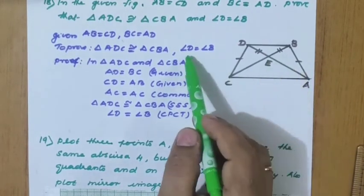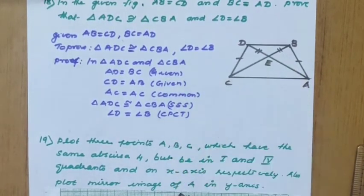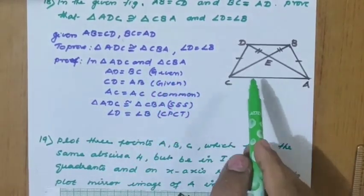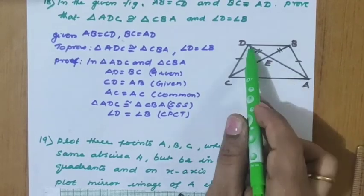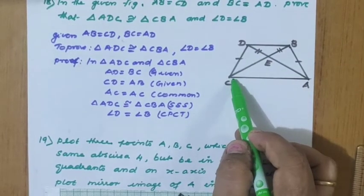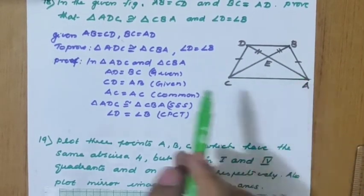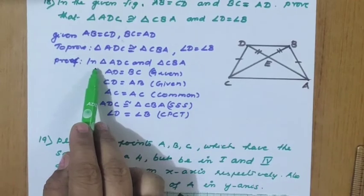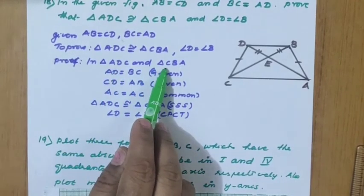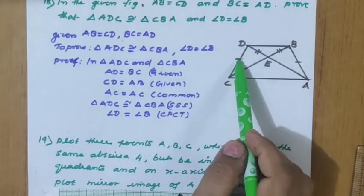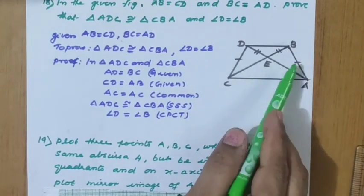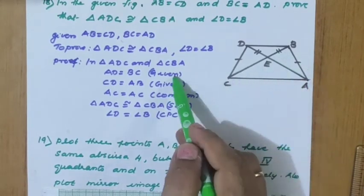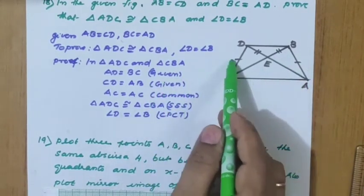In triangle ADC and triangle CBA: AD equals BC — that is the given diagonal. CD equals AB — that is the second condition. AC equals AC — common side. So all three sides are established.